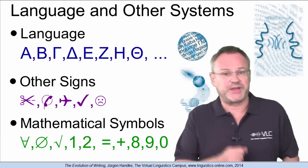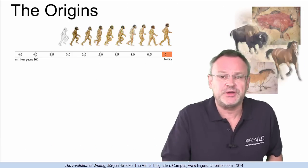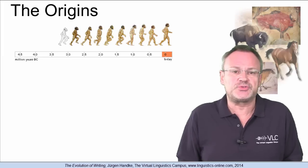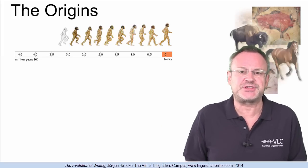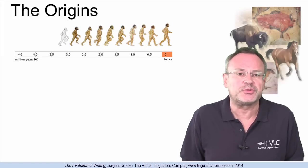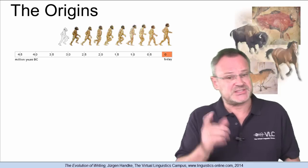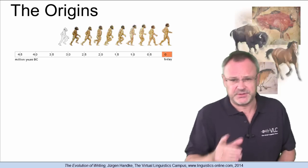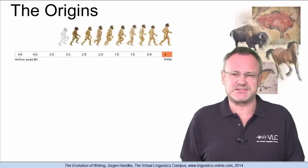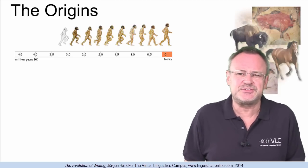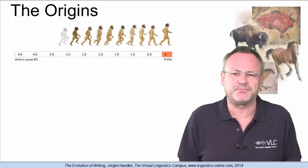Writing did not appear from scratch. A long evolutional process proceeded before a set of signs could be called a system. At some point in the past, our ancestors felt the need to preserve certain information.